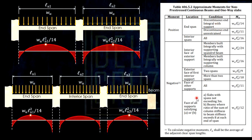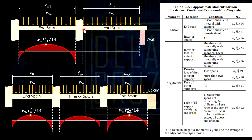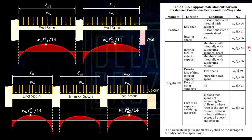For 'discontinuous and integral with support,' the best example is when a wall is placed there — the beam rests on the wall. If it just rests (nakapatong), it is freely rotating and not fully restrained, so the moment at that end is zero. For end spans with this unrestrained condition, the positive moment is W·LN²/11. For interior spans under all conditions, the positive moment is W·LN²/16, using LN2 since we are in span 2.